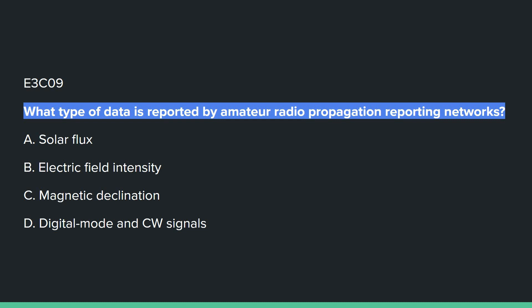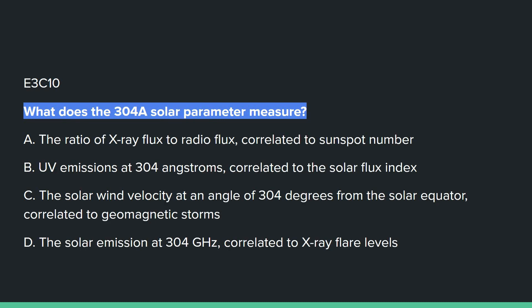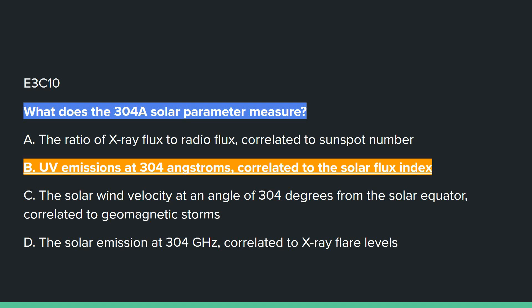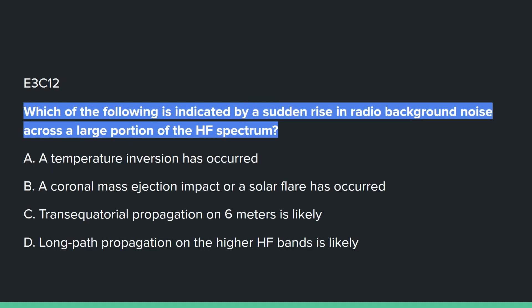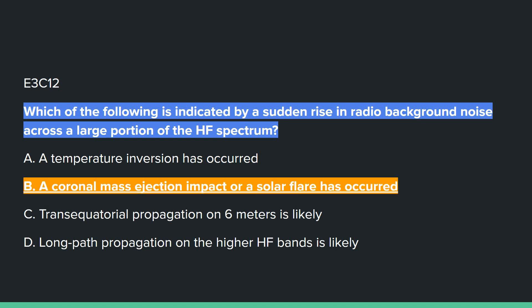E3C10: What does the 304A solar parameter measure? That's B: UV emissions at 304 angstroms, correlated to the solar flux index. E3C11: What does the VOACAP software model? That's C: HF propagation. E3C12: Which of the following is indicated by a sudden rise in radio background noise across a large portion of the HF spectrum? B: a coronal mass ejection impact or a solar flare has occurred.